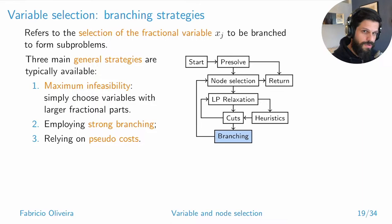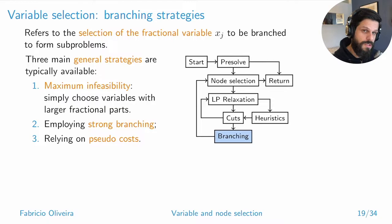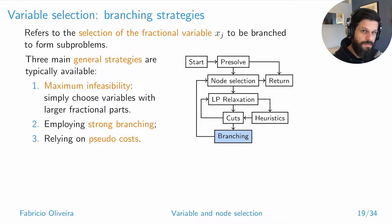That's the obvious approach. The two more sophisticated ideas are called strong branching and pseudo costs. Most modern solvers use some form of combination of these two. Here we are in our scheme for the branching cut.